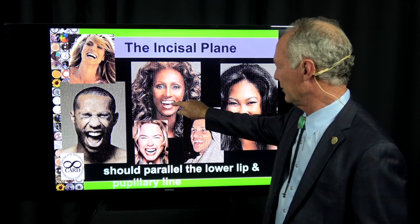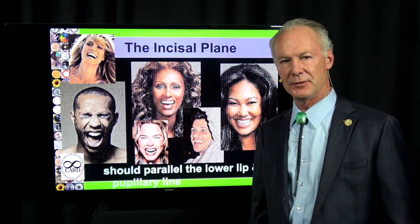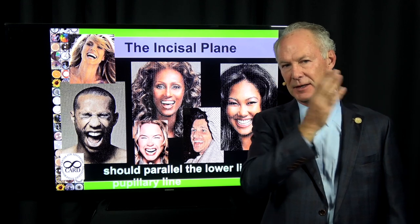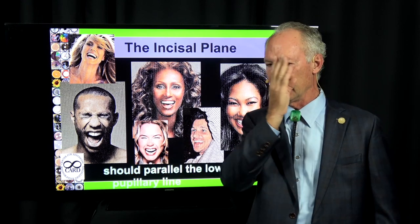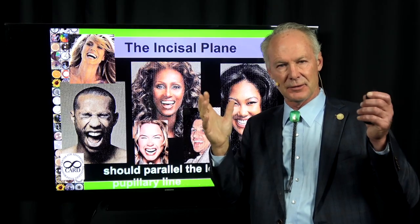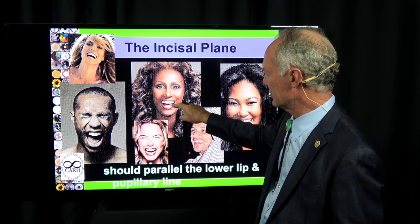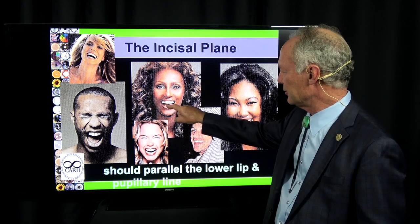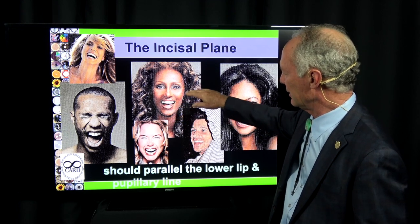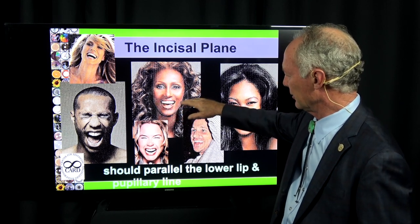Sometimes one side of the face is not symmetrical with the other. In naturally occurring teeth, one side is not the same length as the other. So you start with the centrals being the same length and then manipulate the incisal edges of the adjacent teeth so it blends. In the naturally occurring dentition, small asymmetries are normal.